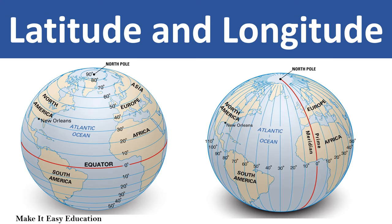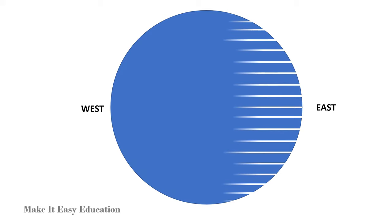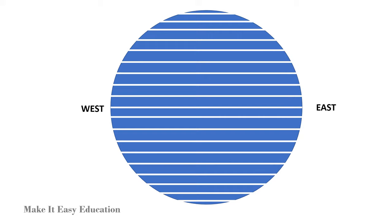Latitude and Longitude. Lines of latitude are horizontal lines that run east to west around the earth. Lines of latitude are called parallels because these lines are parallel to each other.